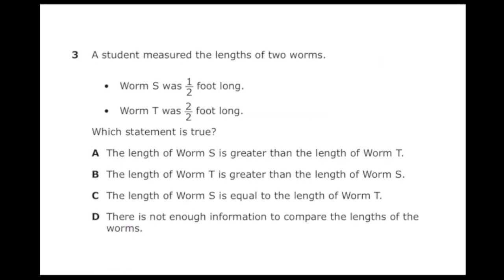This is number three from the 2022 third grade math STAR test. A student measured the lengths of two worms. Worm S was one half foot long and worm T was two over two foot long. Which statement is true? If S was one over two and T was two over two, obviously worm T was bigger.